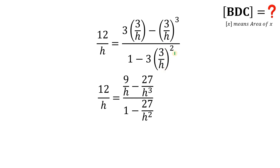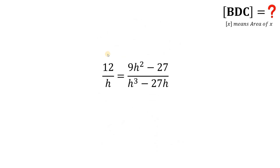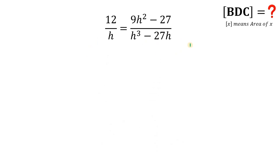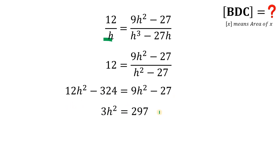Multiplying the right-hand side by h cubed over h cubed gives us 9h squared minus 27, all over h cubed minus 27h. Now let's multiply both sides by h to eliminate the h in the denominator, then cross-multiply. This gives us 12h squared minus 324 equals 9h squared minus 27.